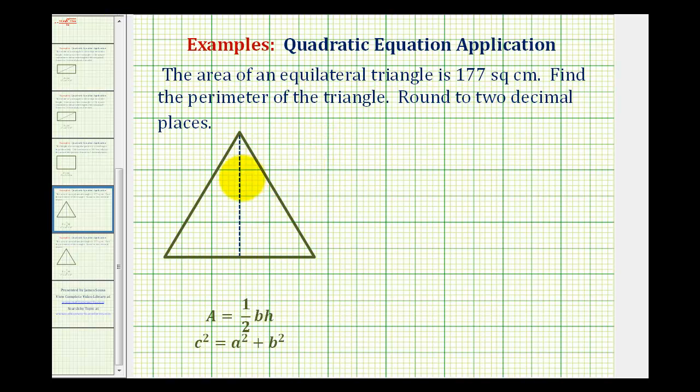To do this problem, we're not going to use trigonometry. We're going to use the Pythagorean theorem and the area formula for a triangle. So for convenience, we're going to let the length of each side be 2x centimeters.